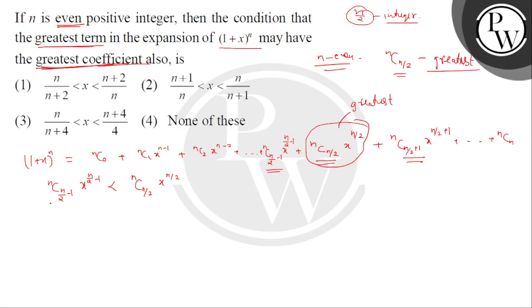nC(n/2-1): using the nCr formula, that is n! divided by (n/2-1)! times (n - (n/2-1))! which is (n/2+1)!, times x^(n/2-1). We need this to be less than nC(n/2)·x^(n/2). Cancelling n! and common factorial terms, we simplify.